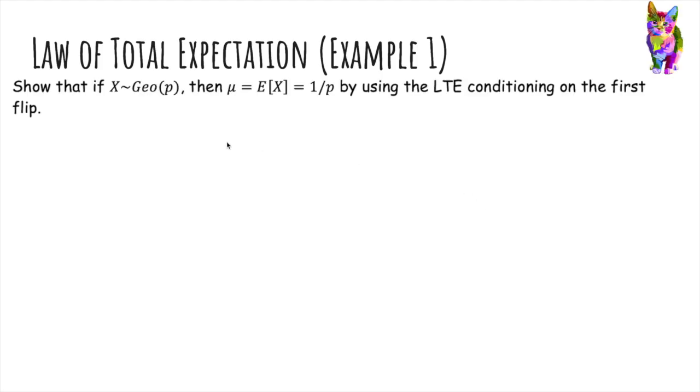So now we're going to finally prove that the expected value of a geometric random variable with parameter p is 1/p. And we're going to use the law of total expectation, conditioning on the first flip.